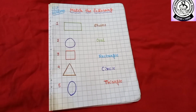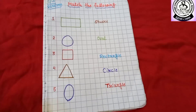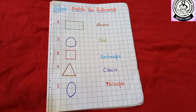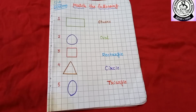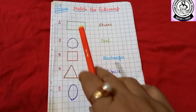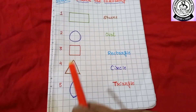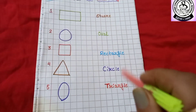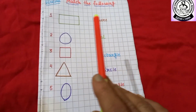Hello and welcome back to my online maths class. From today onwards we are going to start our revision part. So already you have learnt shapes. So today we are going to match the following. That means here I have drawn some shapes, and here I have written the name of shapes. So what you have to do? You have to match.